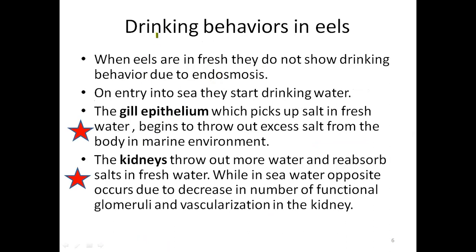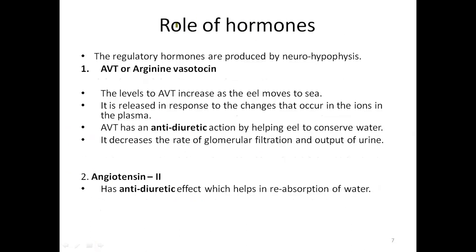When eels start drinking water once moving towards the ocean, a lot of salts also enter the body and the eel faces the problem of excessive salt. This has to be eliminated. For that, the gill epithelium and the kidneys play an important role — they start excreting a lot of salt from the body. The gills throw out excessive salt, and the kidneys start producing highly concentrated urine and efficiently excrete a lot of excessive salts.